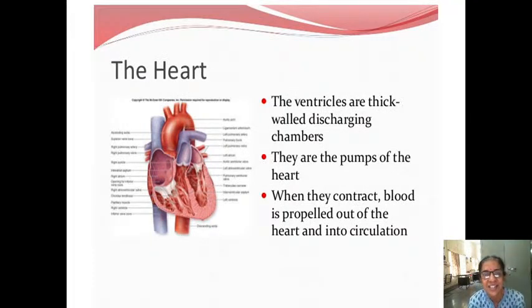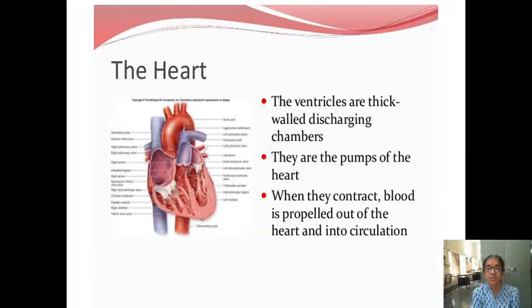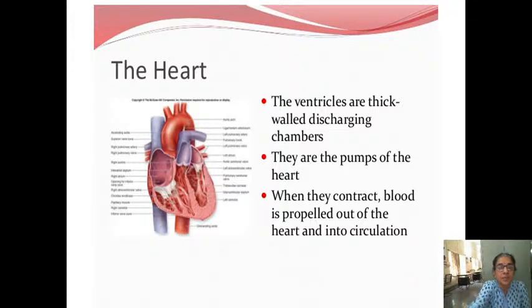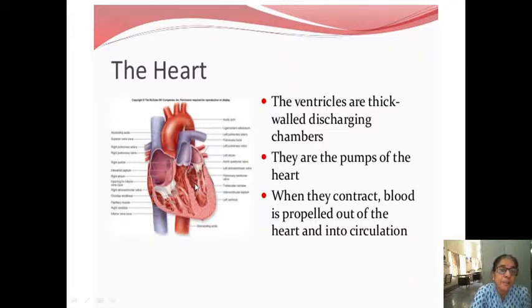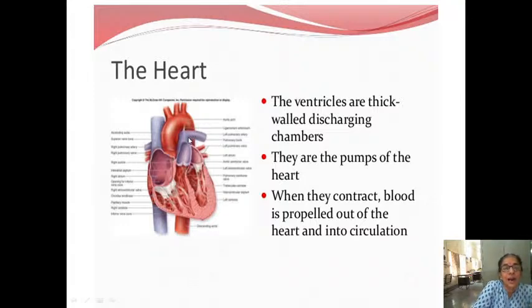The ventricles are thick-walled discharging chambers — they are the pumps of the heart. When they contract, blood is propelled out of the heart and into the circulation. From the left ventricle, blood comes into the aorta. From the right ventricle, blood comes into the pulmonary artery.